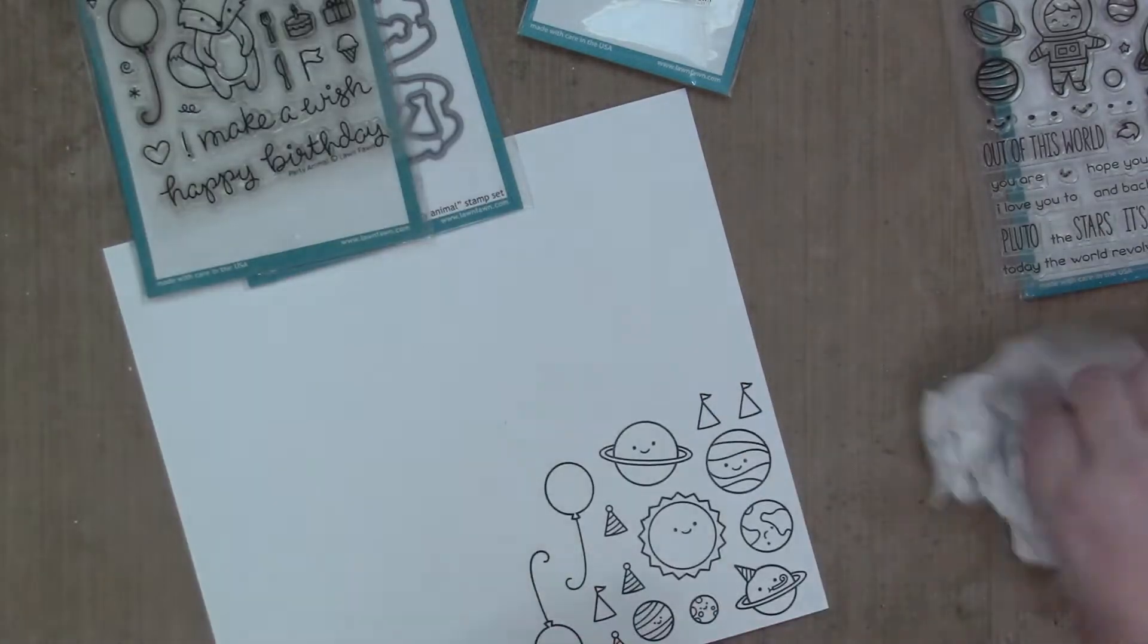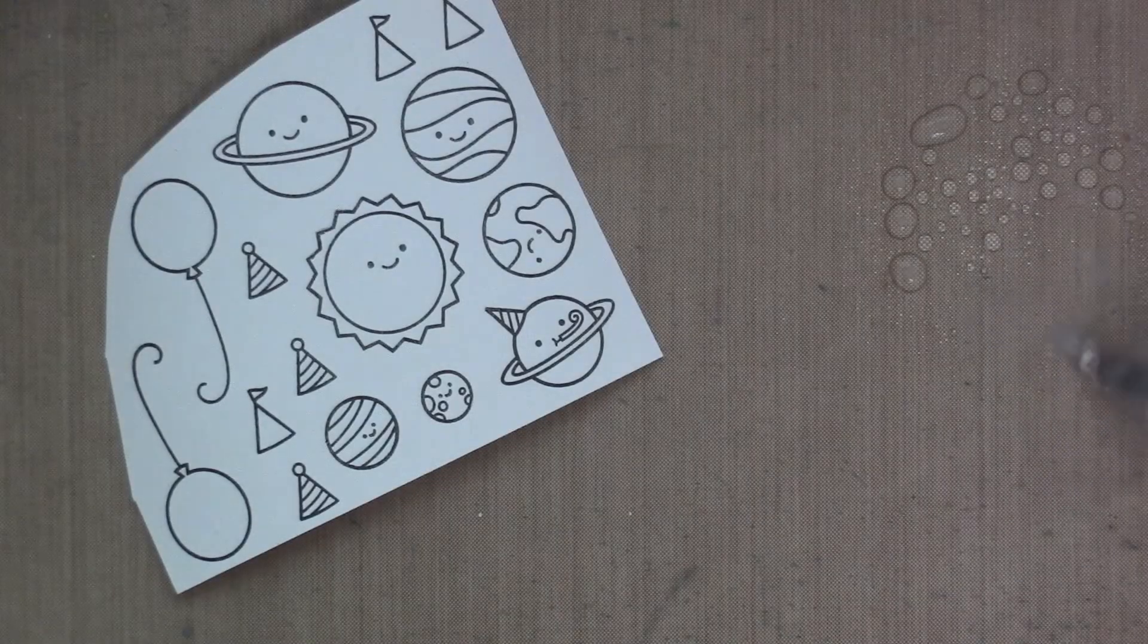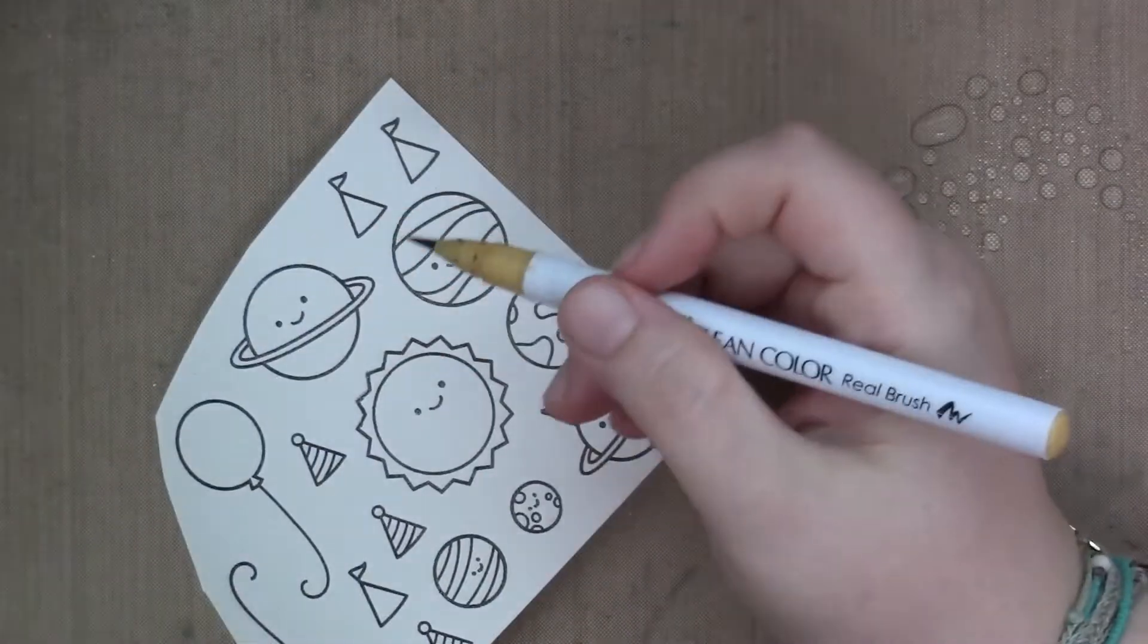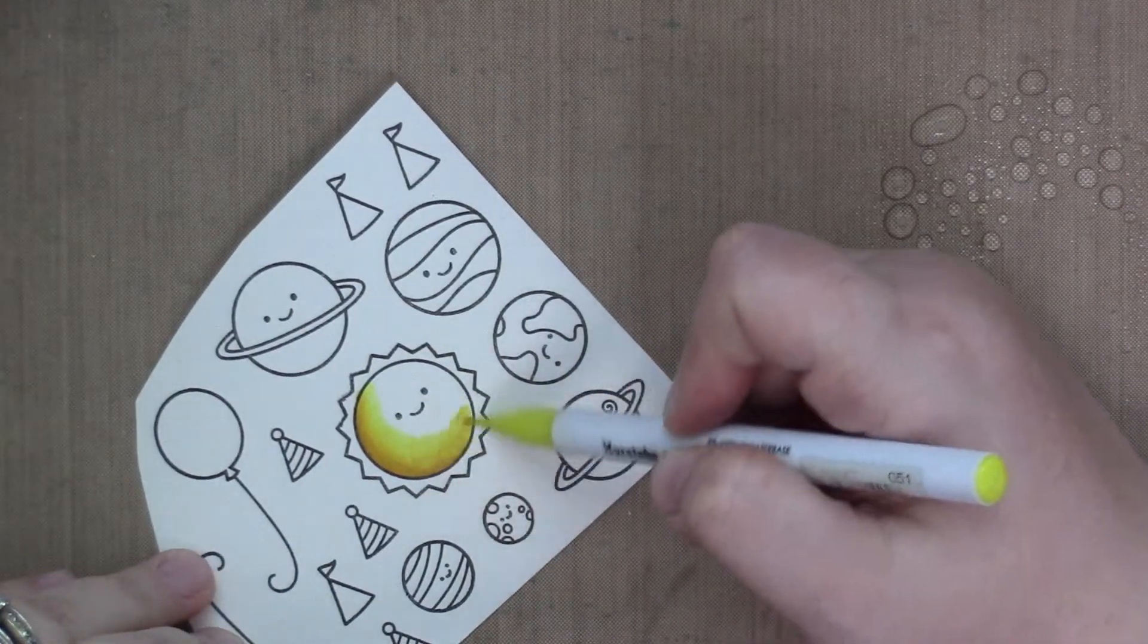Anyway, as you can see, I am stamping enough party hats for all my extra planets and also a couple extra balloons, because it's a party. I am spritzing some water onto my craft mat and getting my dry water brush wet and then setting it aside for when I use it.